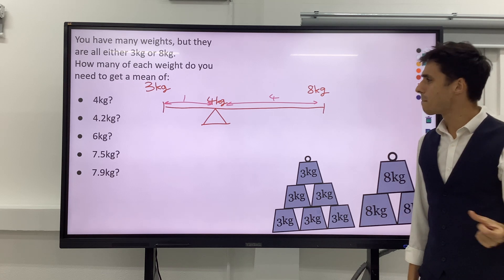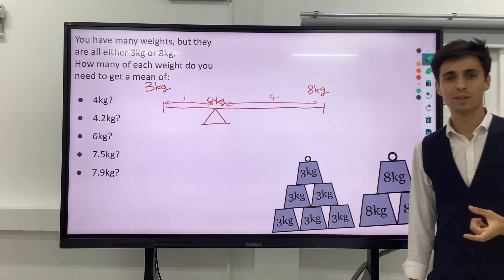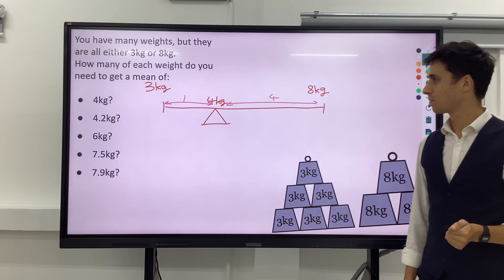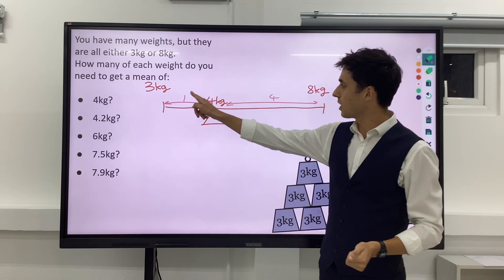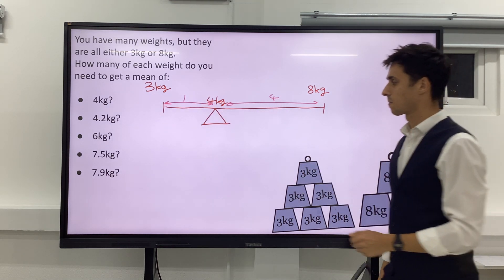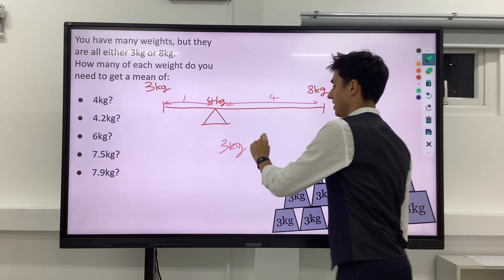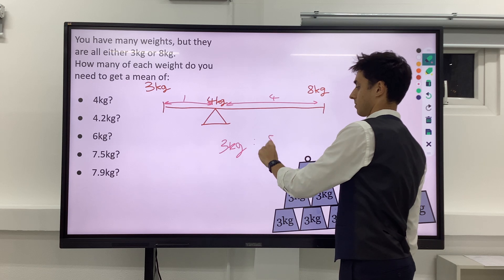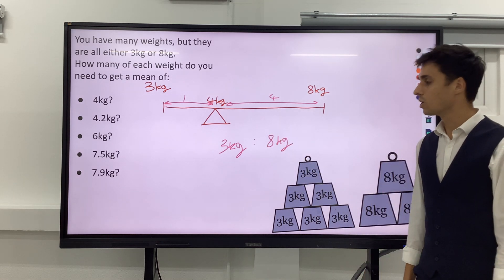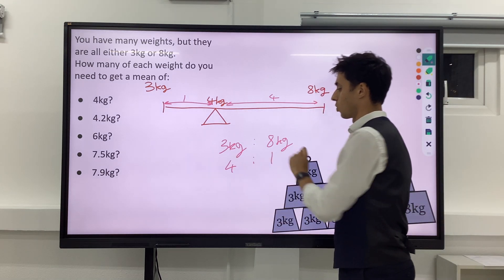Thinking back to our method, the distances are in a ratio that is the inverse to the weights, or the forces. So if we've got 1 to 4 as a ratio of our distances, that means our ratio of 3kg to 8kg must be the inverse of that ratio. So instead of 1 to 4, we need 4 to 1.